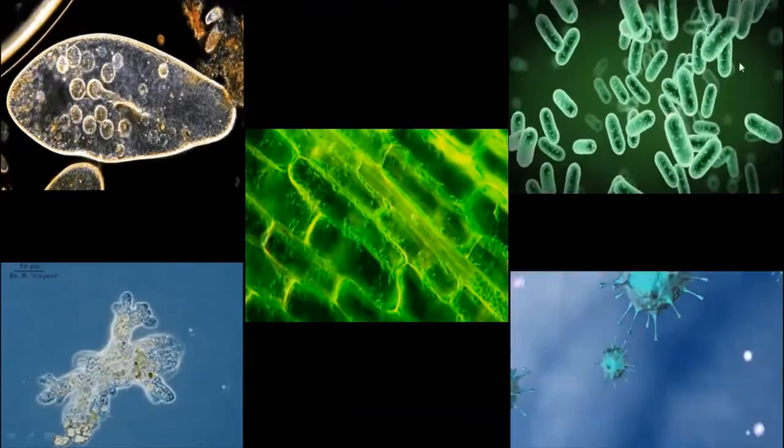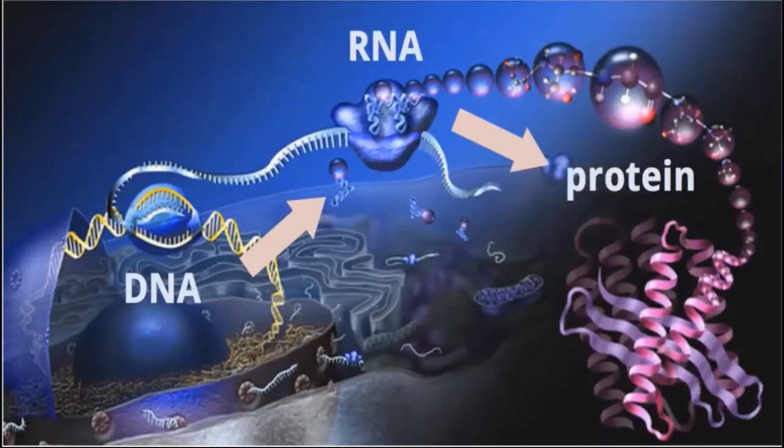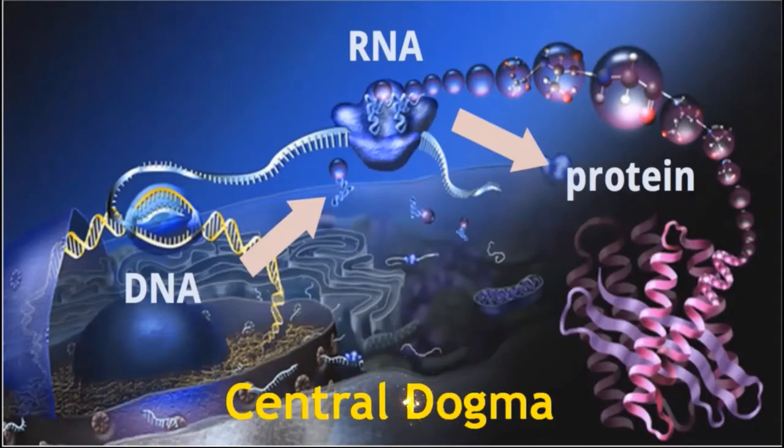The process of gene expression is summarized in the central dogma proposed by Francis Crick. The central dogma of molecular biology explains the flow of genetic information within a biological system. It states the one-way flow of information from DNA to RNA and from RNA to protein.